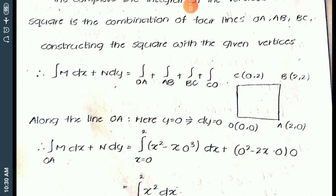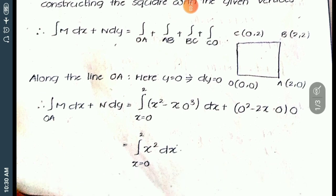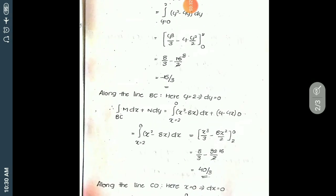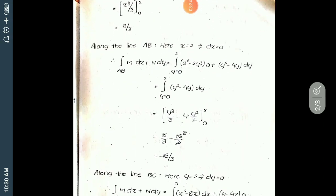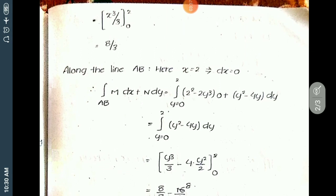Write the integral from x = 0 to 2, substituting y = 0 and dy = 0 — you get the integral of x² dx. Finding the integral gives x³/3, and substituting the limits, the answer is 8/3.